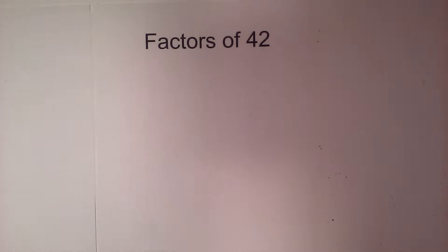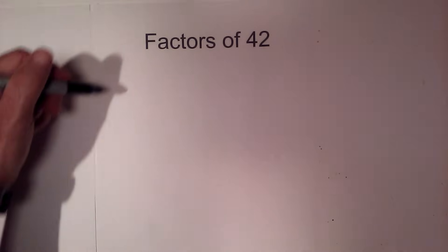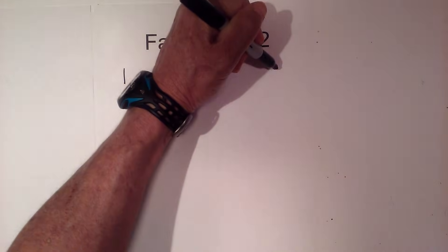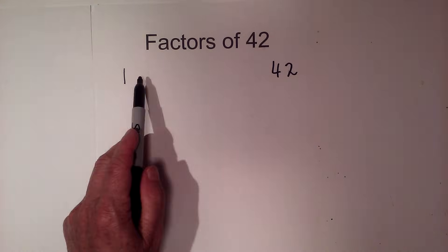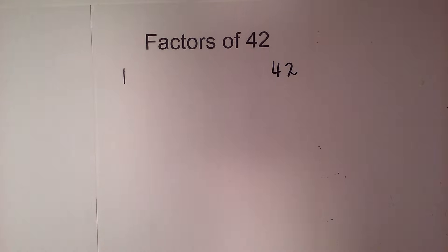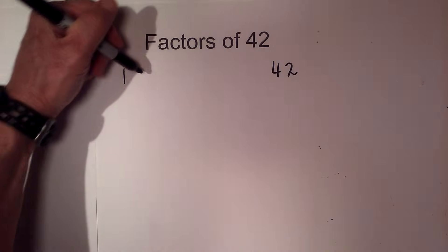In this video let's find all the factors of 42. I like to use this technique: 1 times 42 equals 42, and then find all the numbers in between that multiply together to equal 42.